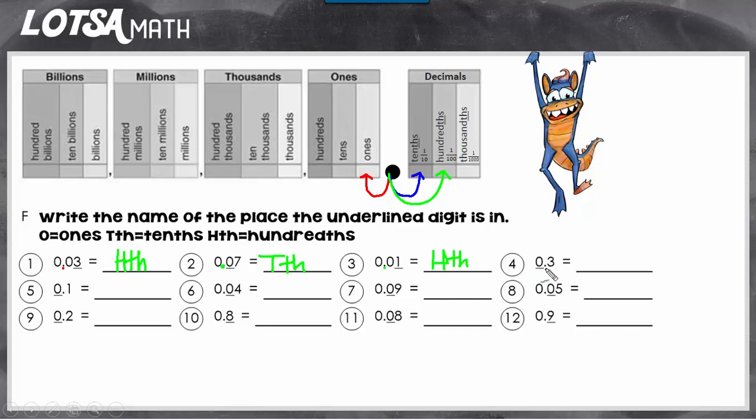So the first step is to find the decimal. The place directly to the left is the ones place, so in this case the place is in the ones place. All right, you do the rest on your own, and if you have any trouble just go back and re-watch the video. Good luck.